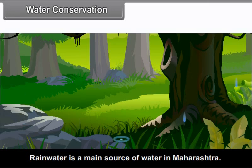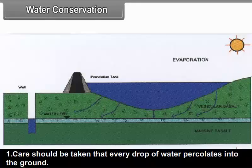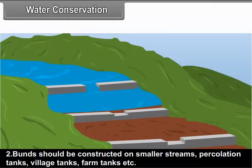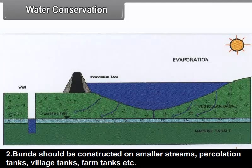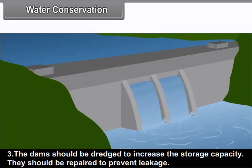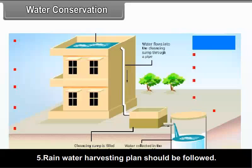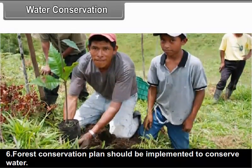Water conservation: Rain water is the main source of water in Maharashtra. Maximum area is under drought prone zone, so it is necessary to conserve water. Methods include: 1. Ensuring every drop of water percolates into the ground. 2. Constructing bunds on smaller streams, percolation tanks, village tanks and farm tanks. 3. Dredging dams to increase storage capacity and repairing them to prevent leakage. 4. Creating social awareness to save water. 5. Implementing rain water harvesting plans. 6. Implementing forest conservation plans to conserve water.